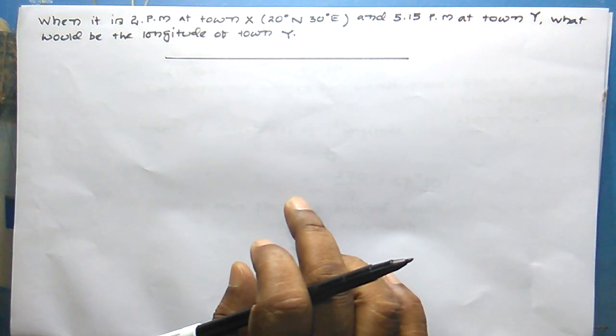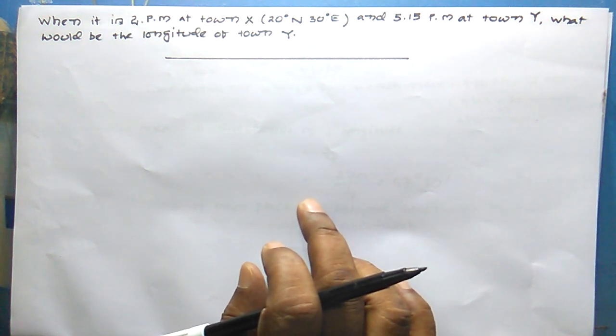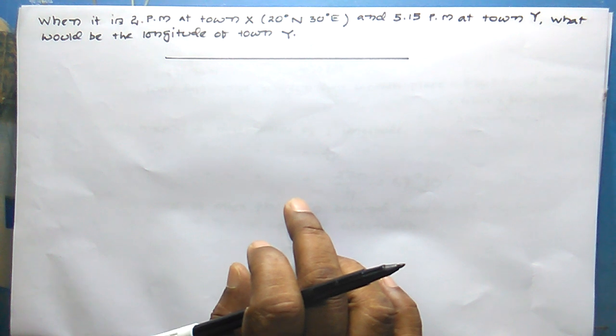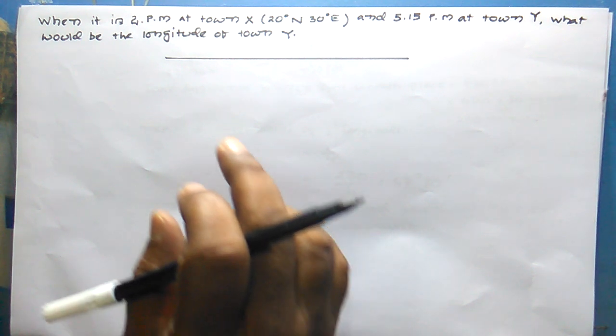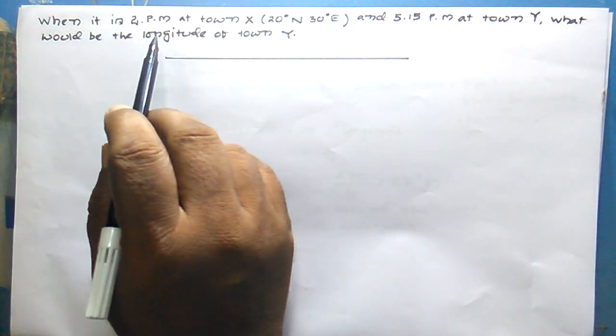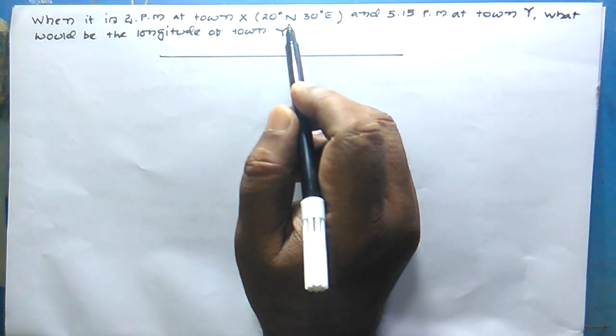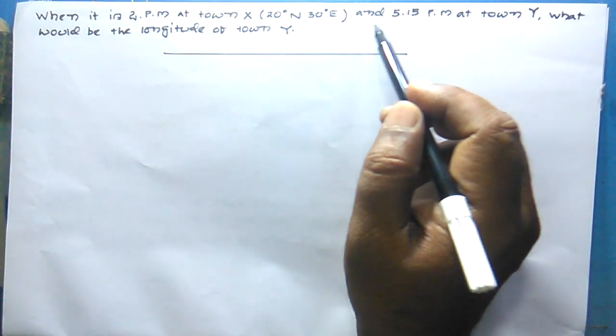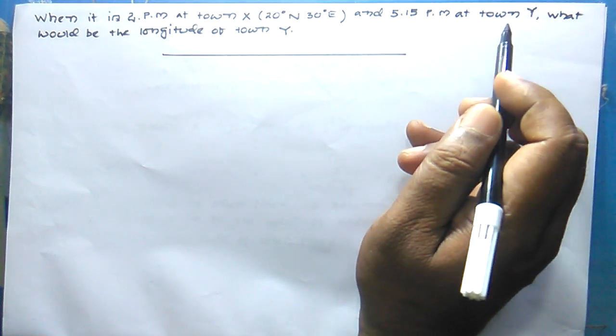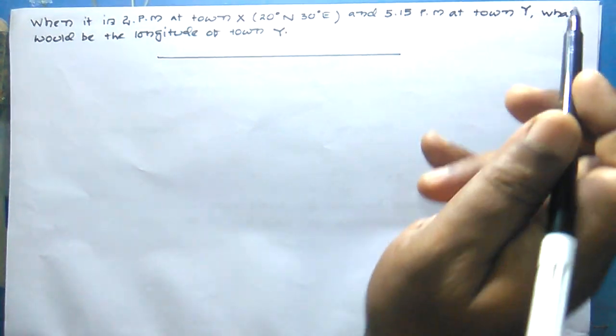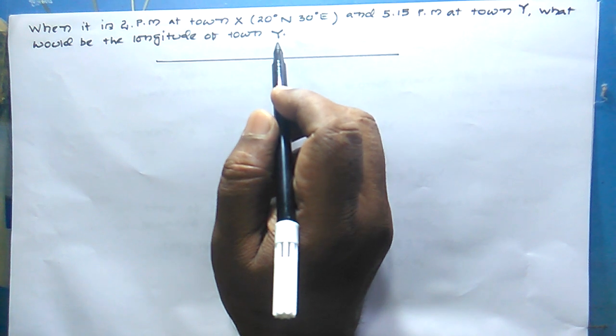This sum is taken from your book, Arun Sagarpal, question number H. When it is 2 p.m. at town X, 20 degree north, 30 degree east, and 5:15 p.m. at town Y, what would be the longitude of town Y?